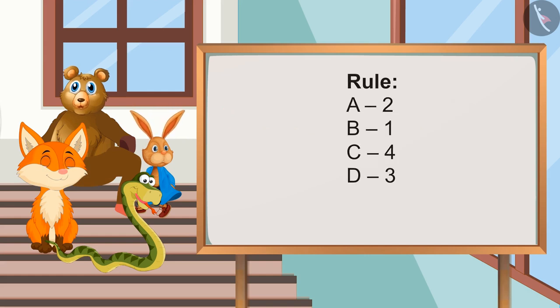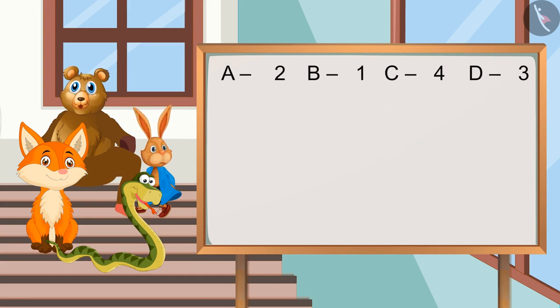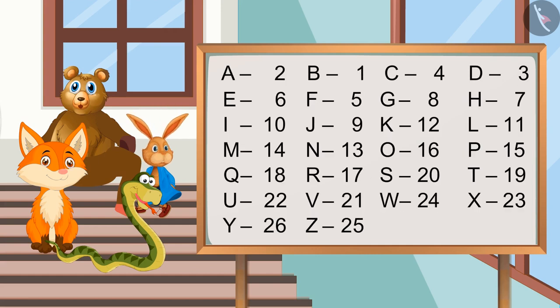If we put alphabets in this order - two for A, one for B, four for C, three for D, etc. - then how will we write 'let us go home' in number code? Let's first finish the code given by you. So number code for E will be six and F will be five.